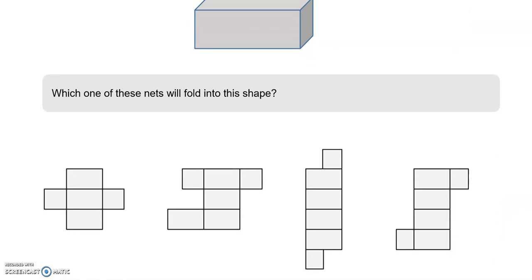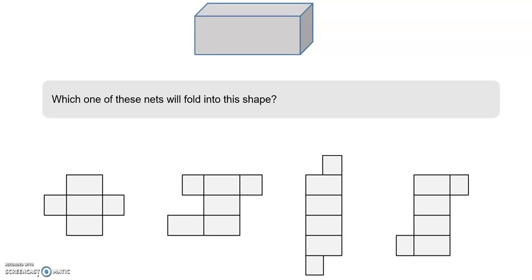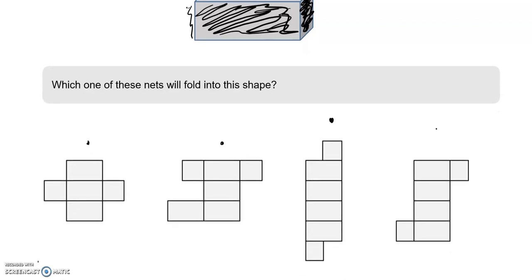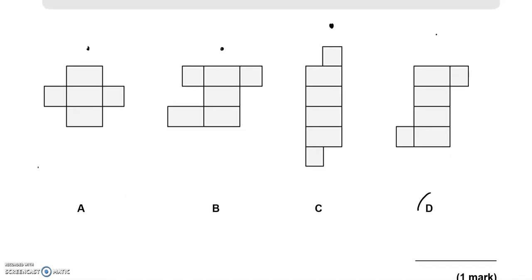Which one of these nets will fold into this shape, into this cuboid? We know that a cuboid will have four of these long faces. So that's not number one. That's not number two. It's between three and four. But it has these two smaller faces, square faces, which might be all rectangular faces, but they're smaller on the side. And for this option, they are actually not on the side. They are only for this last option. So D is the correct option.